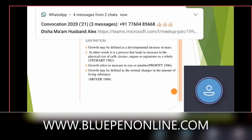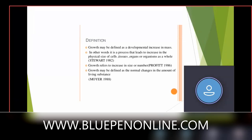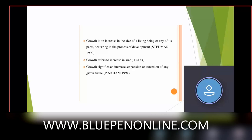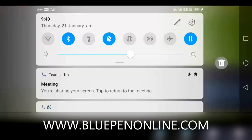These are multiple definitions given by multiple authors. When you describe growth, you have to remember at least three to four definitions and which person gave that definition. You have to remember Profit's definition and Moyers' definition — these two are important. Growth may be defined as a normal change in the amount of living substance. Growth is an increase in the size of a living being, occurring in the process of development — that is the definition given by Stedman. Growth refers to increase in size, given by Todd. Growth signifies an increase, expansion, or extension of any given tissue — given by Pinkman.